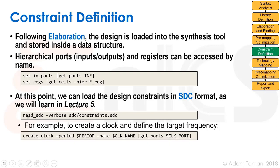We use a command inside Genus called read_sdc — read_sdc -verbose — and point to the SDC file. We'll learn about the format and the different constraints and how to define them. I'm not going to cover that now because they're very relevant for timing, but just know that these constraints exist for right now.